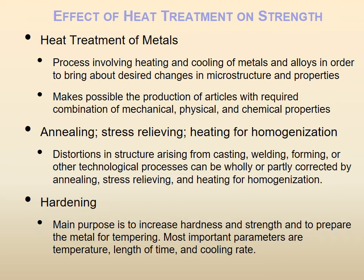There are different types of heat treatment. One category is annealing, stress relieving, or heating for homogenization — homogenization meaning the material has the same properties everywhere. There are slight differences between these three but they are treated similarly. Distortions, defects arising from casting, welding, forming, or any other manufacturing process can be wholly or partially corrected by annealing, stress relieving, and heating for homogenization.